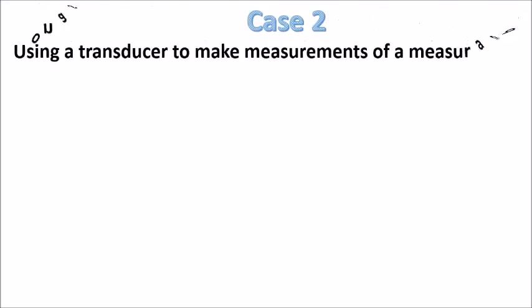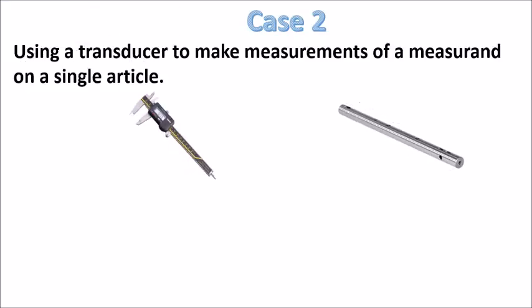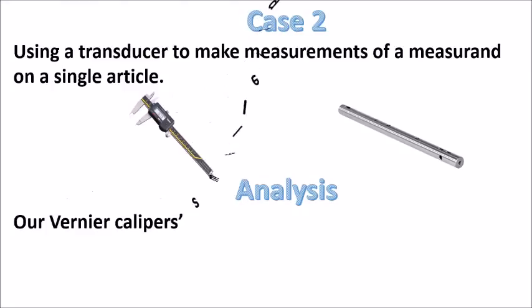For case number two, using a transducer to make measurements of a measurand on a single article, for example, using a Vernier caliper to measure a single shaft diameter. In this case, we use the resolution of the caliper to estimate the error.